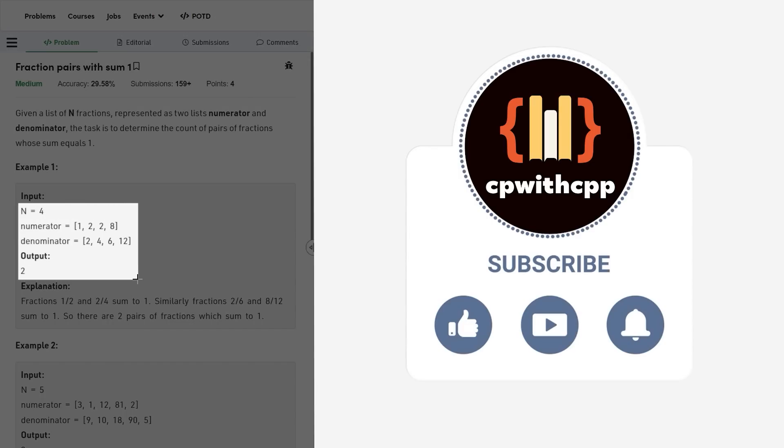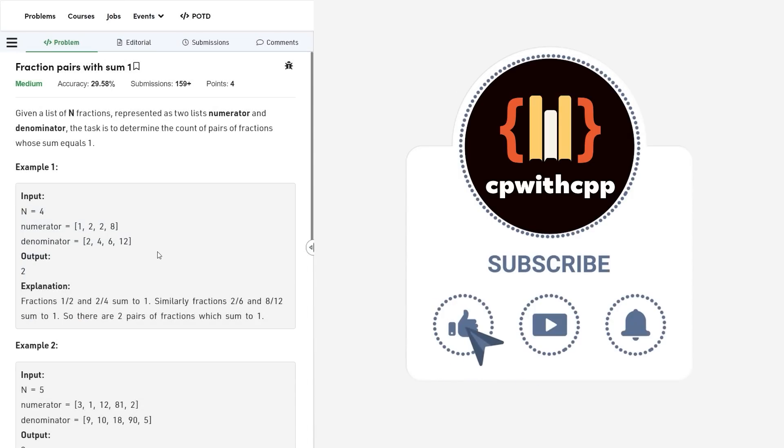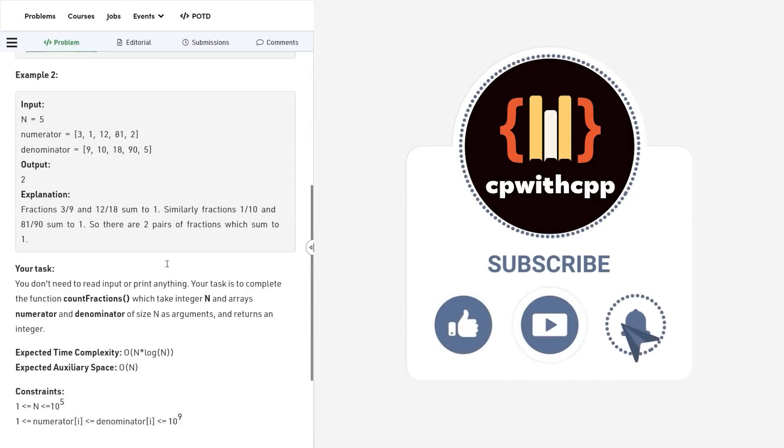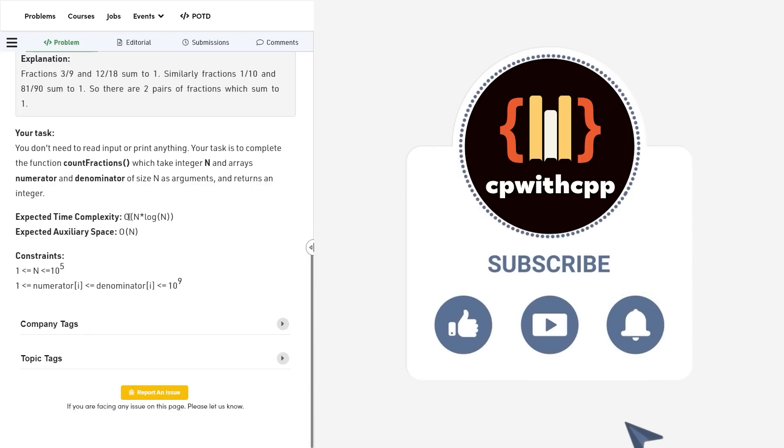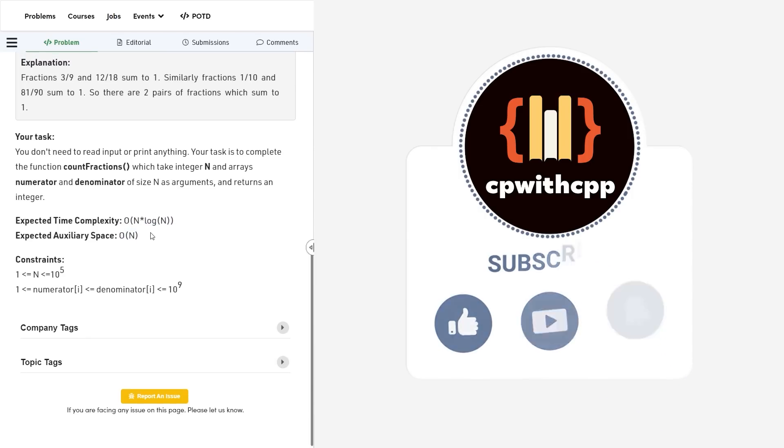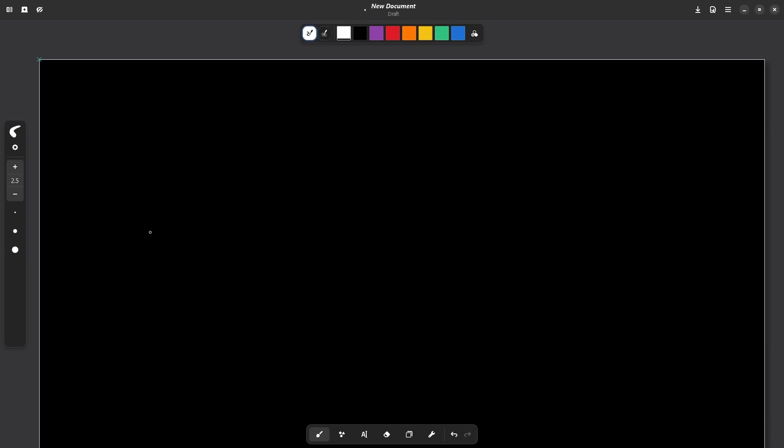I will explain this with the help of an example. Let us take this particular example first and let us also have a look at the time and space complexity. The time complexity is n log n and the space complexity is O of n. Let us see how we can solve this.